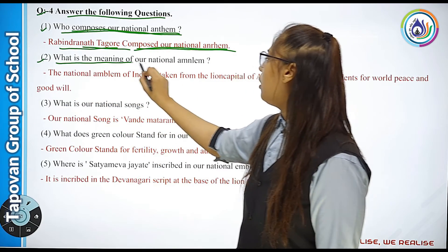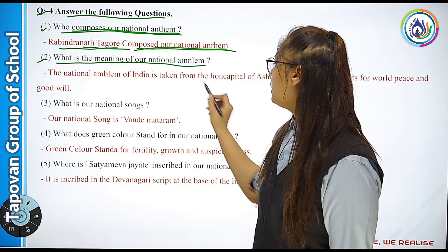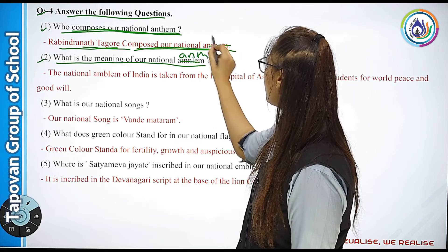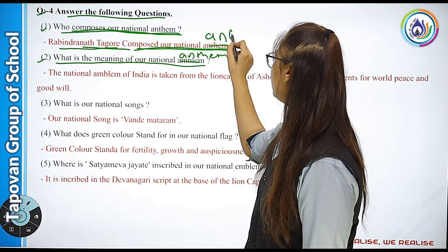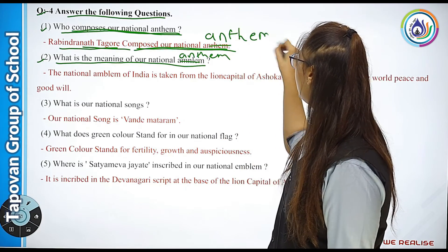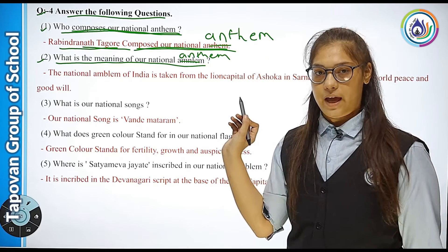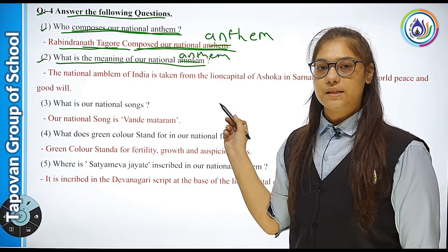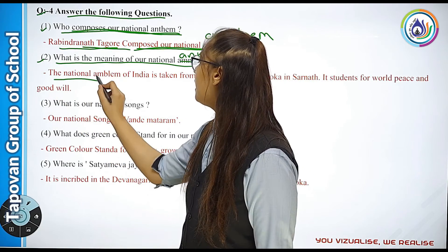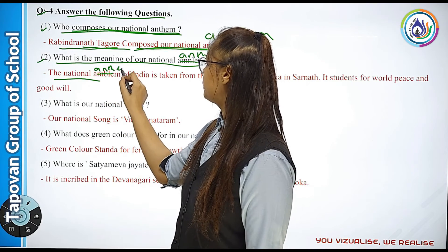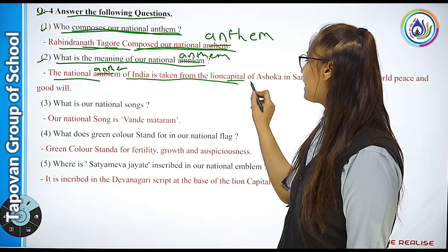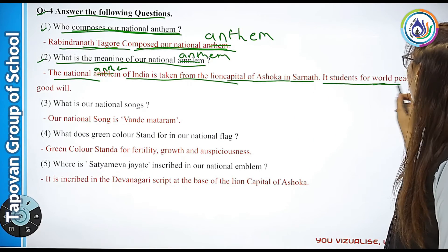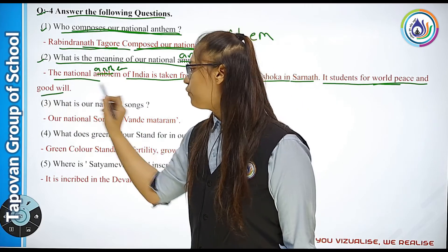Second: What is the meaning of our national anthem? The national anthem of India is taken from the Lion Capital of Ashoka Chakra in Sarnath. It stands for world peace and goodwill.